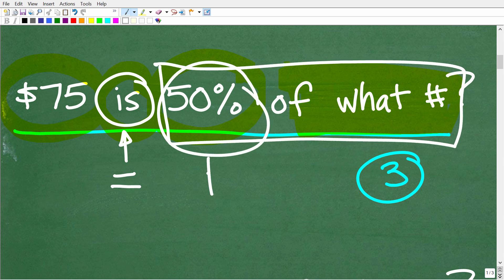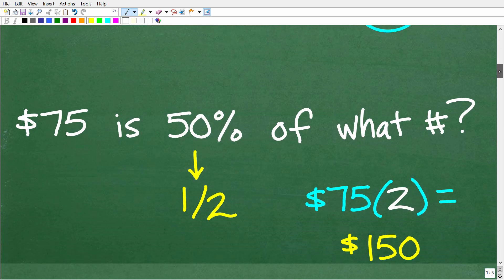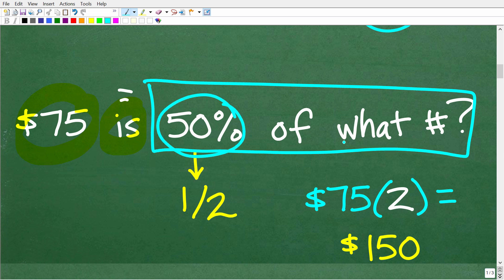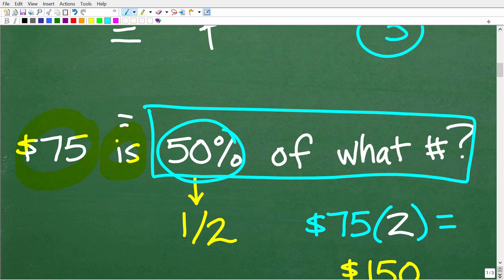There are different ways you can solve this problem. The first way is kind of using basic logic or common sense. I'm going to show you two mathematical ways to solve this percent problem. But first, let's use some basic logic to reason through and get the answer. $75 is equal to 50% of what number? What does 50% mean?